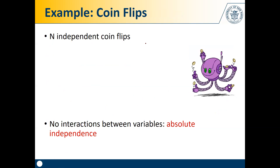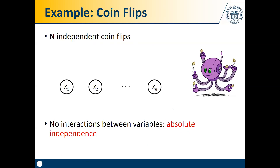With n independent coin flips, since we assume absolute independence, we represent this as a set of n nodes corresponding to variables X_1 through X_n with no edges or arrows between them, since all variables are absolutely independent.